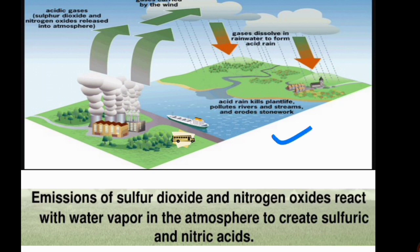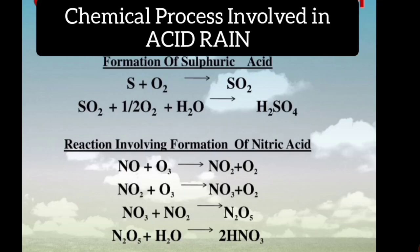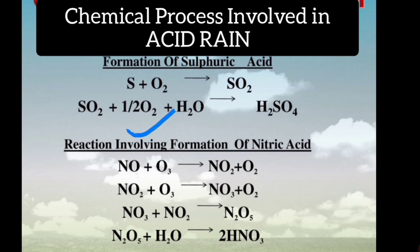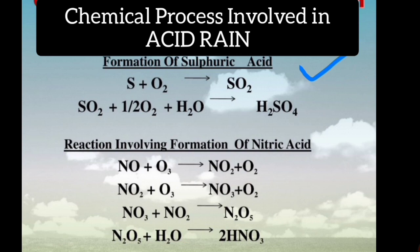Acid rain damages aquatic life, animals, plants, and monuments. It kills plant life, pollutes rivers and streams, and erodes stonework. Regarding sulfuric acid formation: sulfur reacting with oxygen molecules in the atmosphere forms sulfur dioxide, and sulfur dioxide released from factories and industries reacts with oxygen and water molecules to form sulfuric acid.